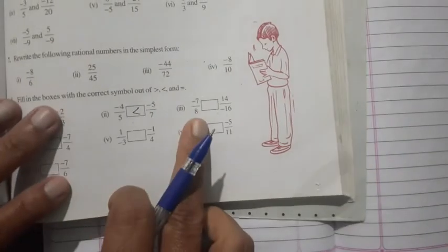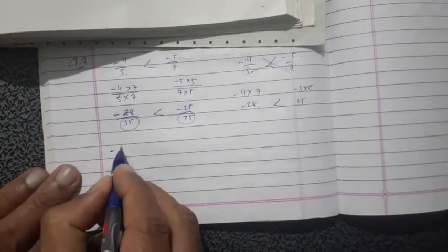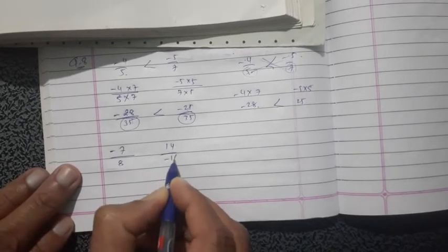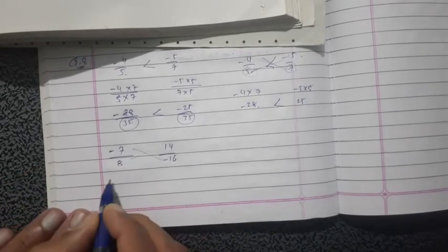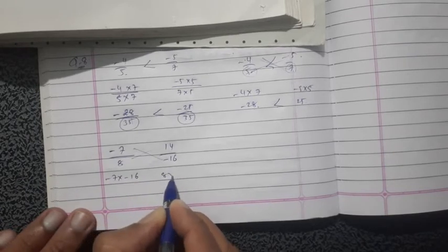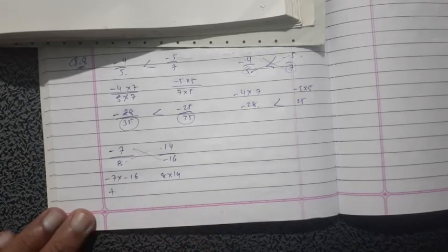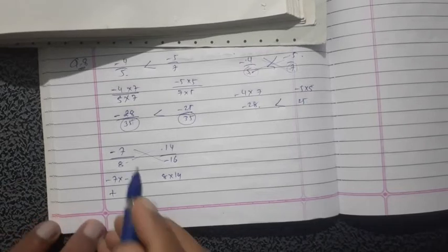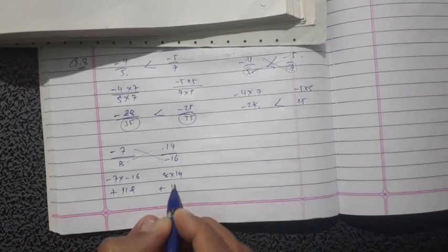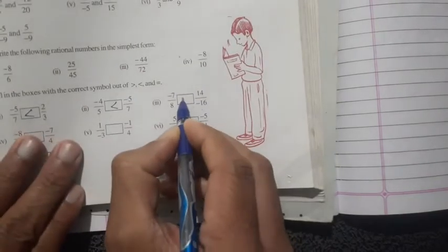Third one: minus 7 upon 8 and 14 upon minus 16. Cross multiply: minus 7 into minus 16, and 8 into 14. Minus times minus is plus, and 16 times 7 is 112. Both sides give 112, so they are equal. Write the equal to sign.